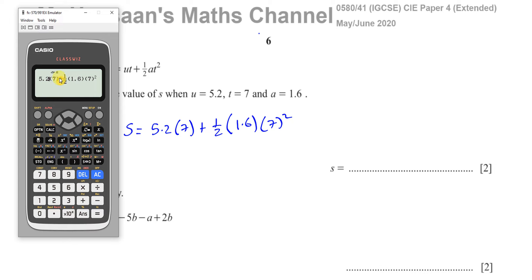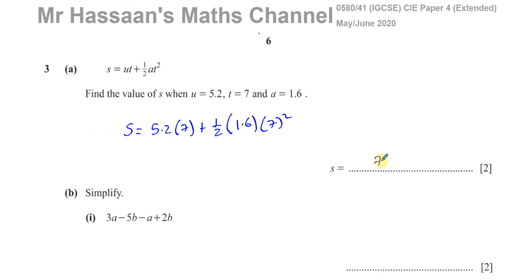5.2, always check before you press equals that you've entered everything correctly. 5.2 times 7 plus a half times 1.6 times 7 squared. And that gives you your answer, 378 divided by 5, which as a decimal is 75.6. So 75.6, that's the value of S. No units given, so we just write down S.